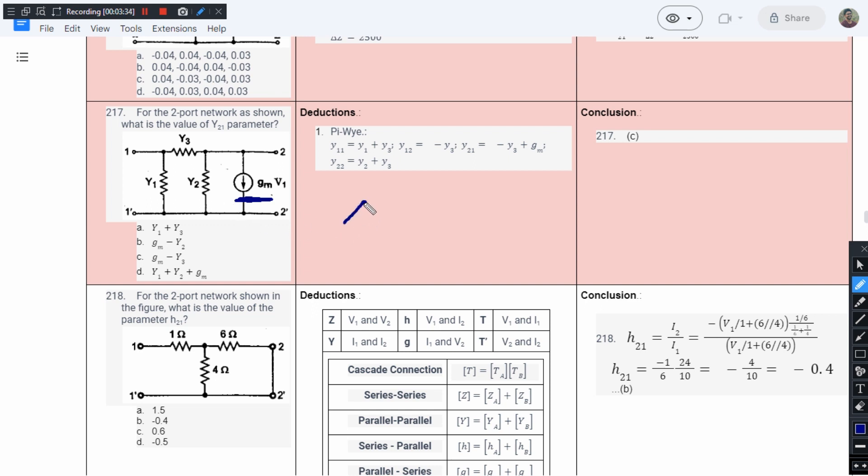In situations like this, the representation for a dependent source is with a rhombus. This is the symbol that should be used to represent a dependent source. But here he has given the symbol of an independent source. By looking at these parameters, we'll have to decide that this is not an independent source, but a dependent one.